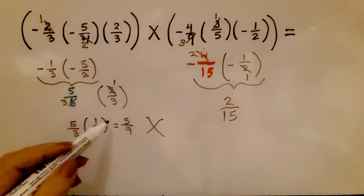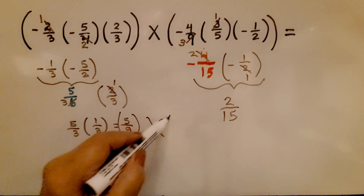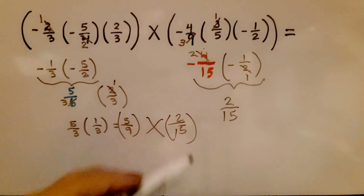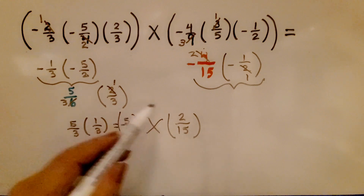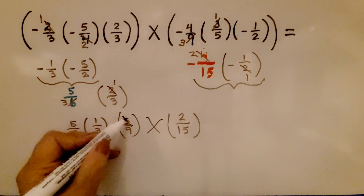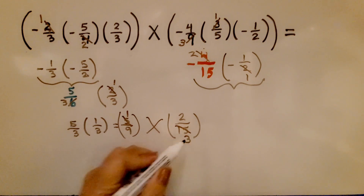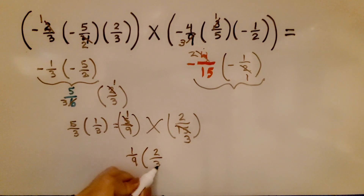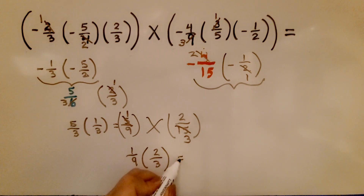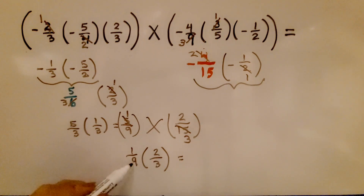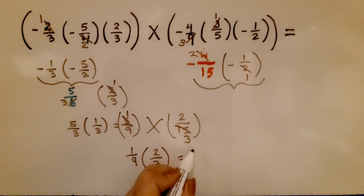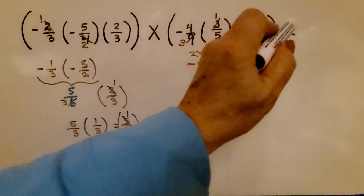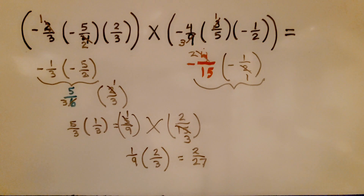Now we multiply the negative four-fifteenths by the negative one-half. They have like signs so the partial product will be positive. Two times one is two over fifteen times one is fifteen, giving positive two-fifteenths. Now we need to multiply positive five-ninths times positive two-fifteenths. We have one five here and three fives there — cross-cancel. That gives one-ninth times two-thirds. One times two is two and nine times three is twenty-seven, so this equals two twenty-sevenths.